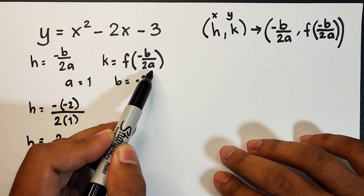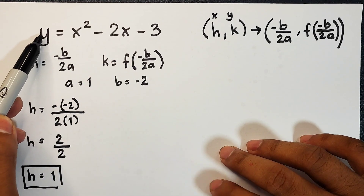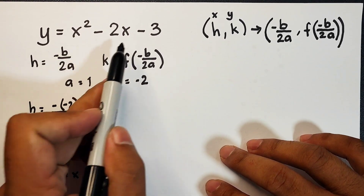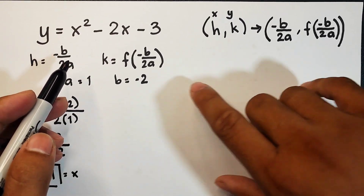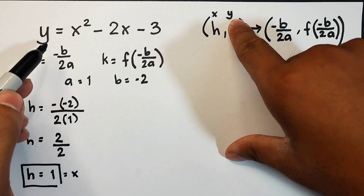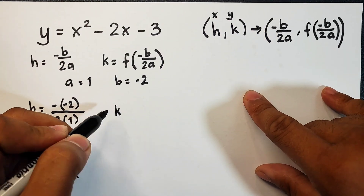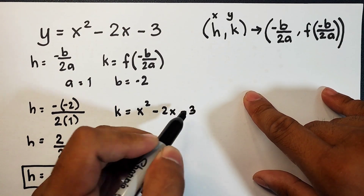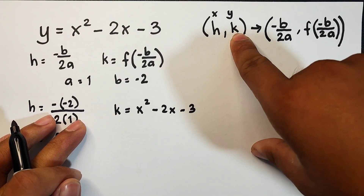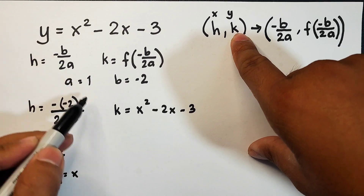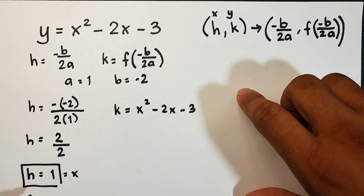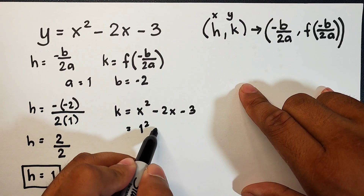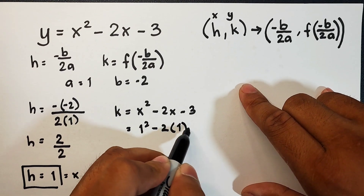To use the formula k is equal to f of negative b over 2a, we need to plug in the value of h or x which is equal to 1. Also remember that your k is equal to y, meaning we can replace y as k. So it will become k is equal to x squared minus 2x minus 3. We plug in the value of x which is 1, so this is 1 squared minus 2 times 1 minus 3.